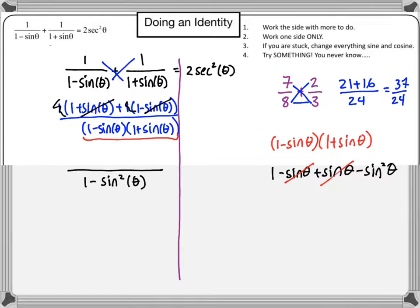since those cancel out, because I'm going to have sine theta minus sine theta, which is 0. And then I got 1 plus 1, which is just going to give me 2.